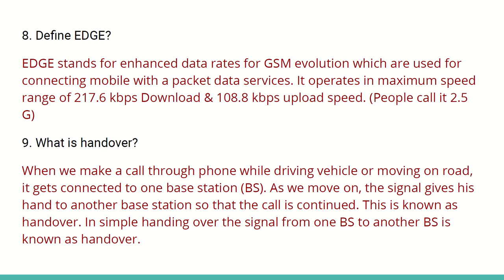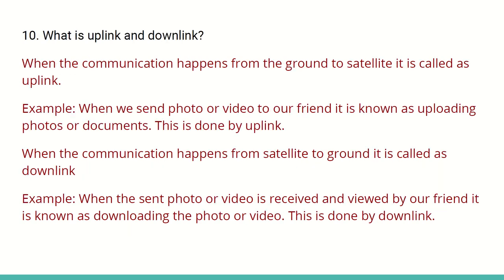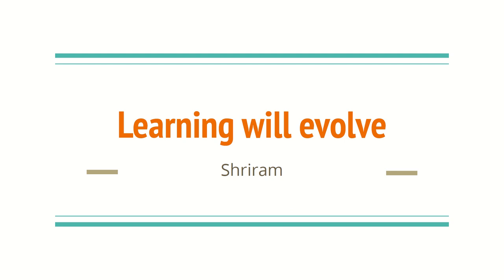The handover happens from one base station to another base station, and that ensures the connectivity for you. What is uplink and downlink? When the communication happens from the ground to the satellite, we call it uplink. For example, when we upload a video or send a photo to a friend, that can be called uplink. When the communication happens in the reverse way — from the satellite to the ground — we call it downlink, like when we download a photo sent by a friend.